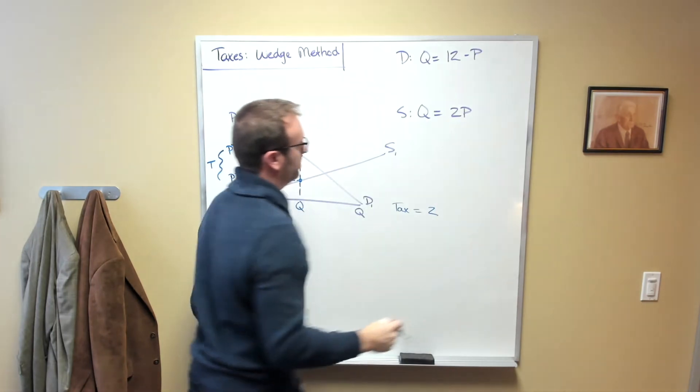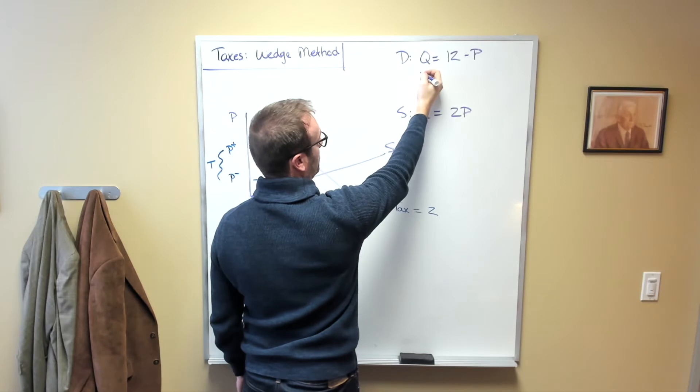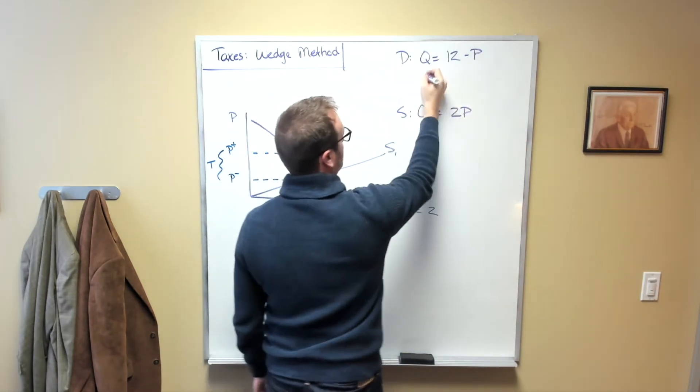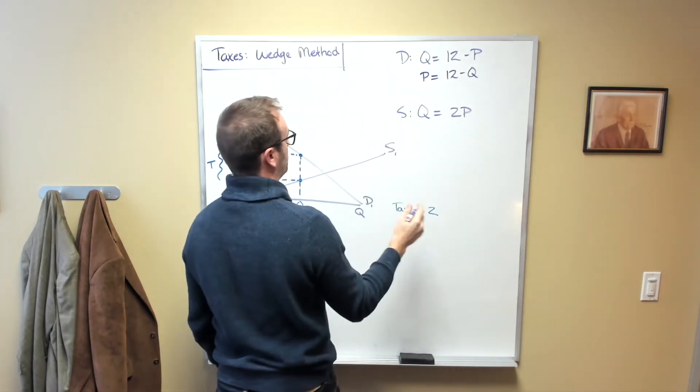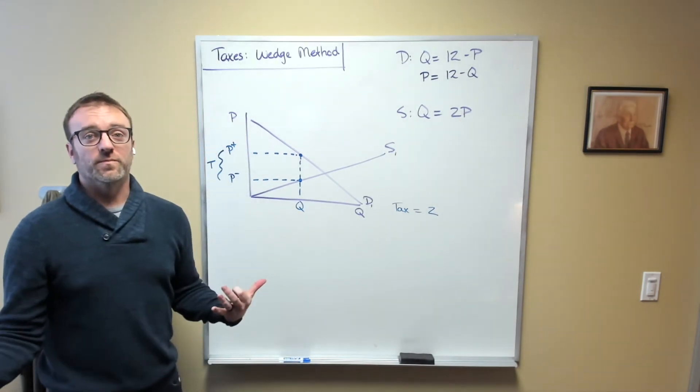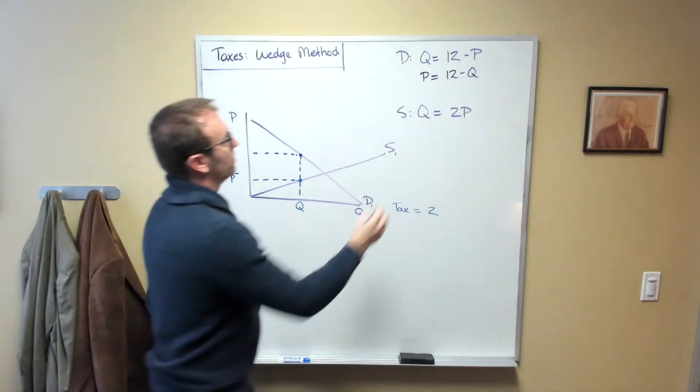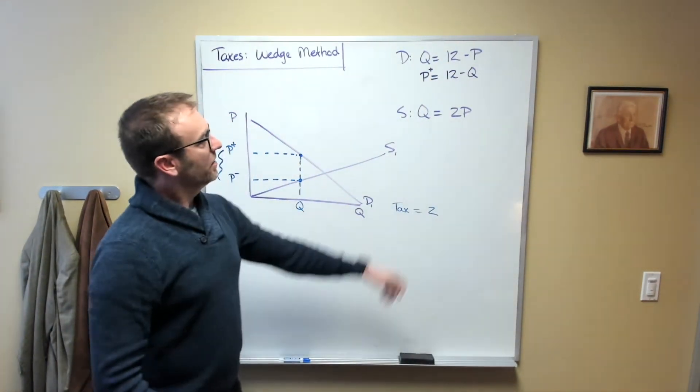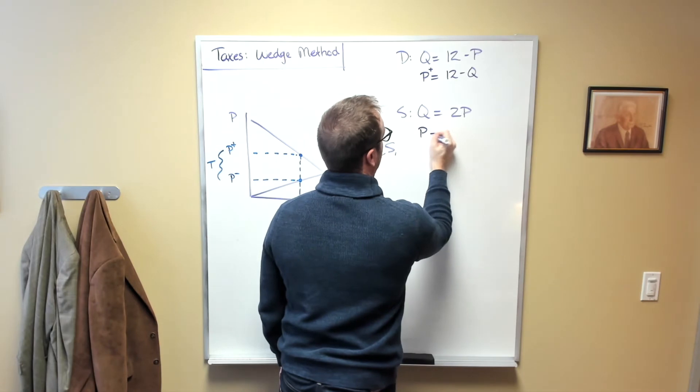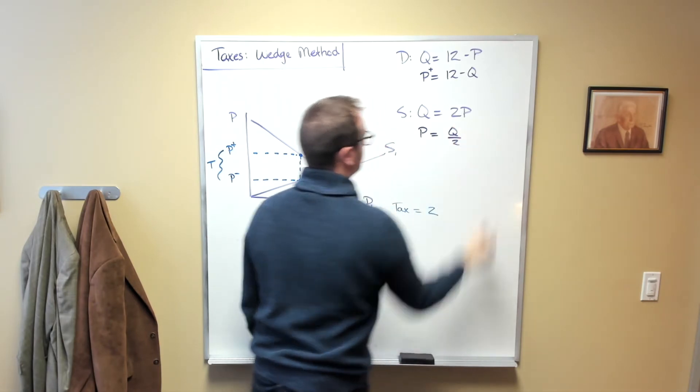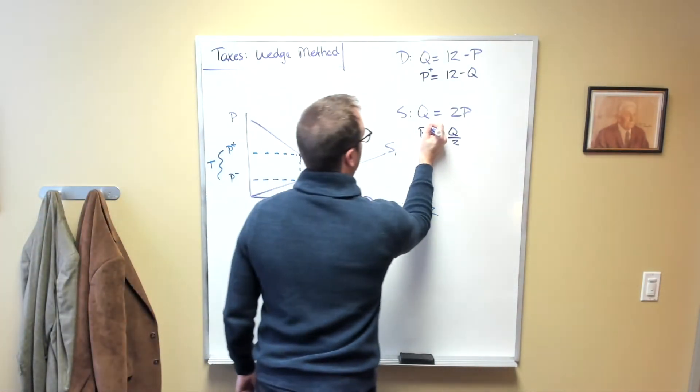So I can rewrite this equation here in terms of P by adding P to both sides and subtracting Q from both sides. And that would just give me P is equal to 12 minus Q. Now in this case, the demand curve represents the amount of money that the consumers are paying, so in this nomenclature here, this would be P plus. And I can solve this equation for P pretty easily just by dividing both sides by 2, and so I get P is equal to Q over 2. And this is the producers' price, and so this would be the P minus.